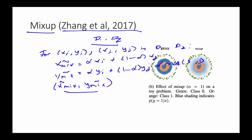What does this do? Looking at a diagram with two classes — orange and green — the blue shading shows the probability that Y equals 1. Without mixup, it's not very smooth, with a pretty sharp decision boundary. But when we do mixup, we get something much smoother in the boundary region.